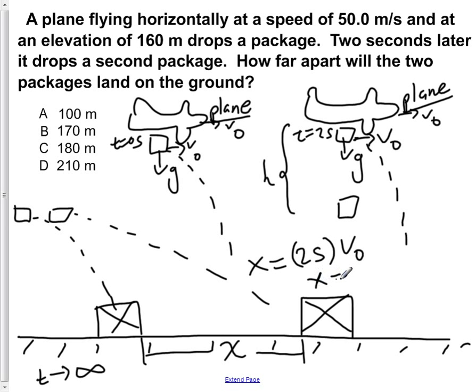The velocity of the plane initially is 50 meters per second. So 50 meters per second times the additional two seconds that the second crate is going to fall for.